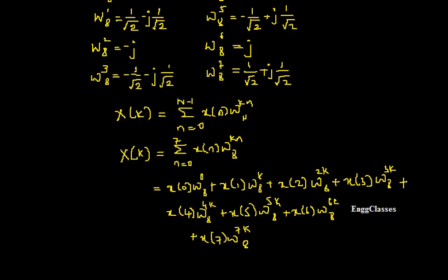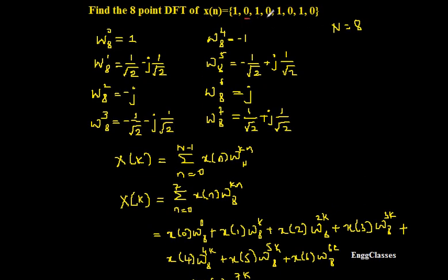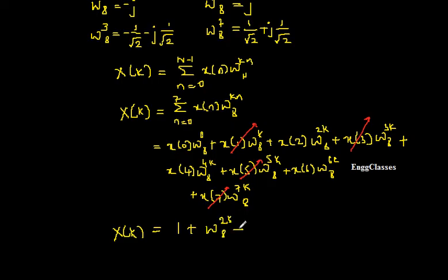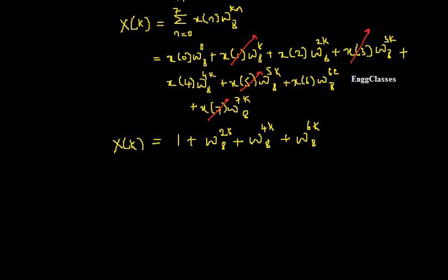In this expression, if you check, every alternate value is 0. That is x(1), x(3), x(5), x(7) are going to be 0. So leaving them and substituting the rest, I get: x(0)·W8^0 + x(2)·W8^(2k) + x(4)·W8^(4k) + x(6)·W8^(6k). Since x(0)=x(2)=x(4)=x(6)=1, this simplifies to 1 + W8^(2k) + W8^(4k) + W8^(6k).